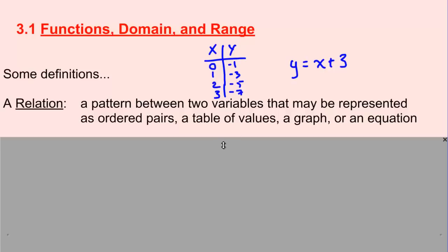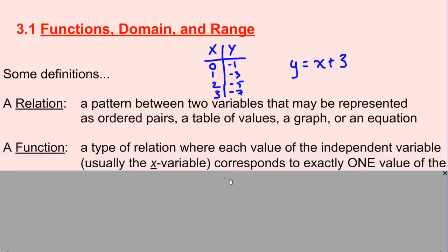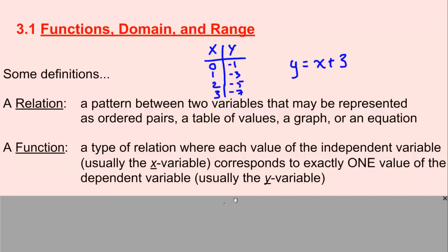So what on earth is a function? Well, a function is actually a specific type of relation where each value of the independent variable — usually the x variable — corresponds to exactly one value of the dependent variable, which we normally refer to as the y variable. Now after saying that, and probably after you pause and read that over again, it may still be a bit confusing, but let me try to explain it better.